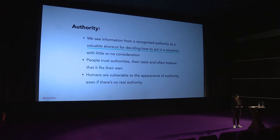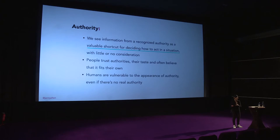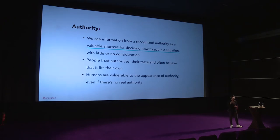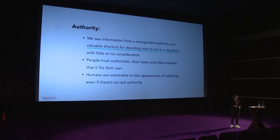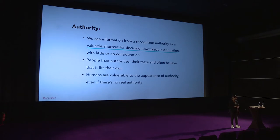People trust authorities and believe that actions of authority figures will suit them too — whatever the person does or uses, we believe it's more likely to be suitable for us. However, humans are vulnerable to the appearance of authority even if there is no real authority. For example, if somebody looks like a police officer, is dressed like one, acts like one, and asks for your ID — most people would not question whether they're really police. They would show their ID simply because the appearance signals authority.